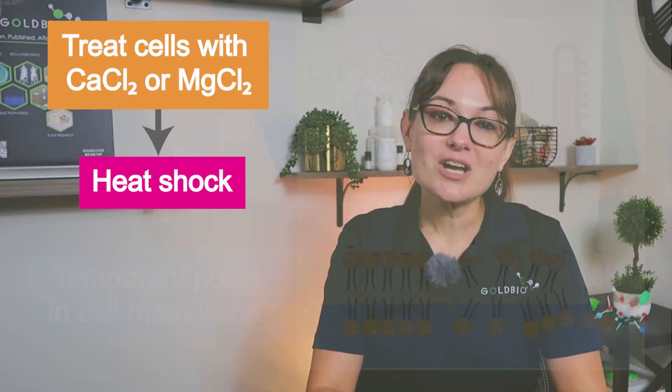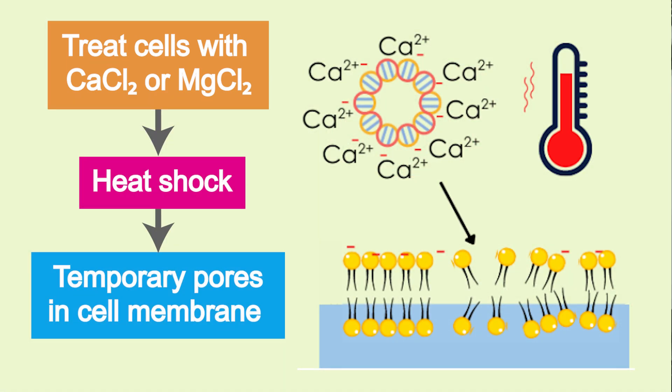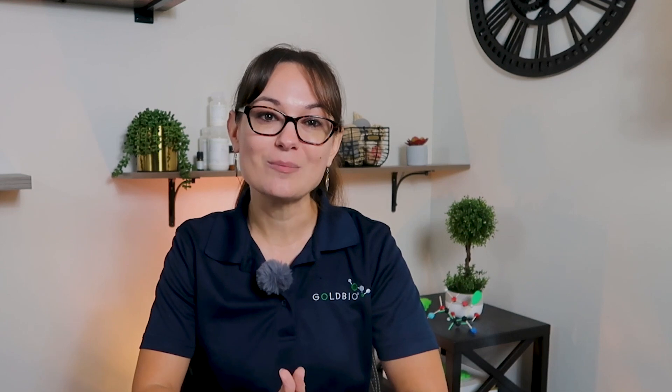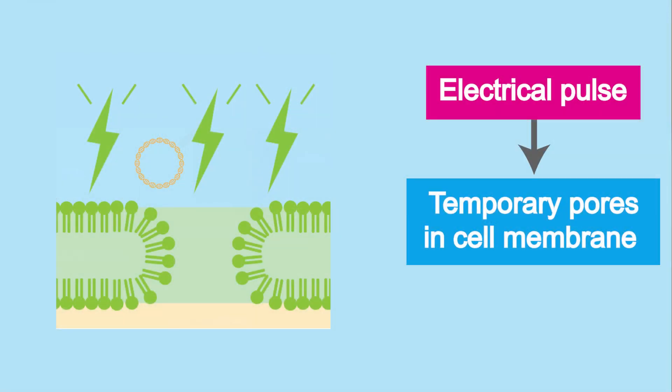Chemically competent cells are created using salts like calcium chloride or magnesium chloride, followed by a heat shock step. The heat shock step creates temporary pores in the membrane for the DNA to enter. Electrocompetent cell transformation involves an electric pulse, which then creates temporary pores in the cell's membrane.